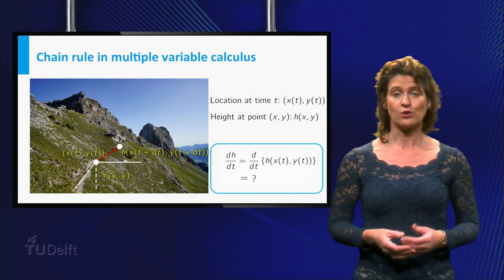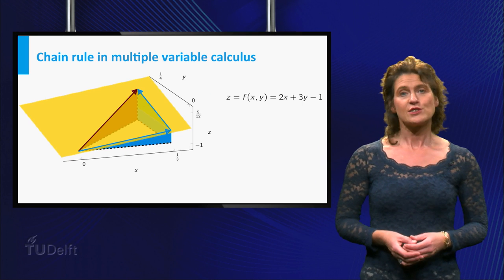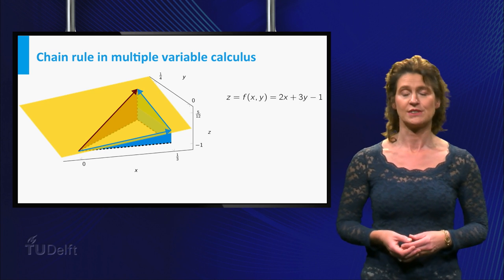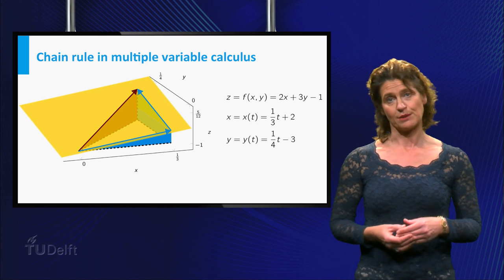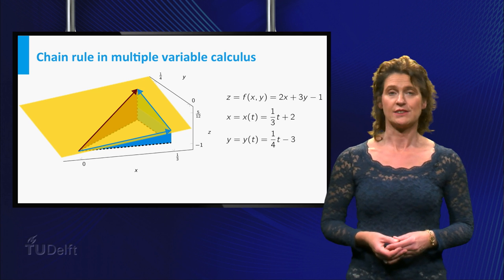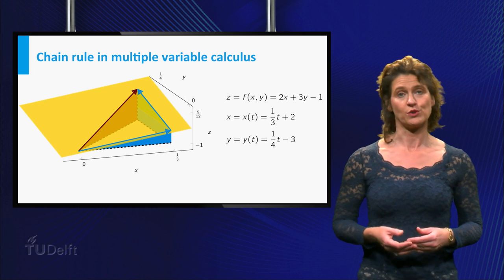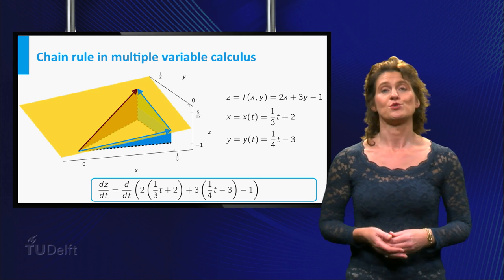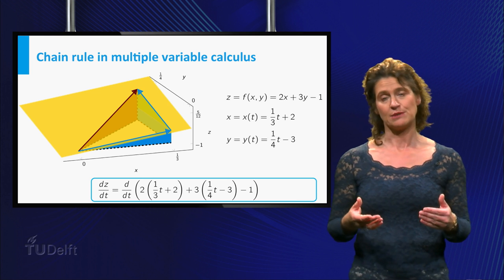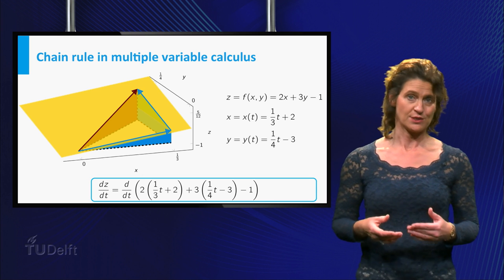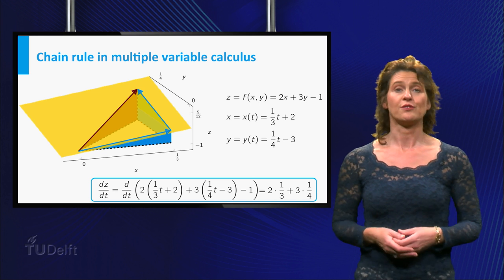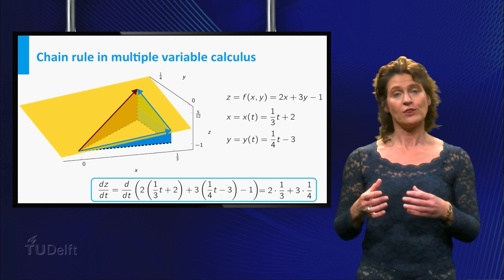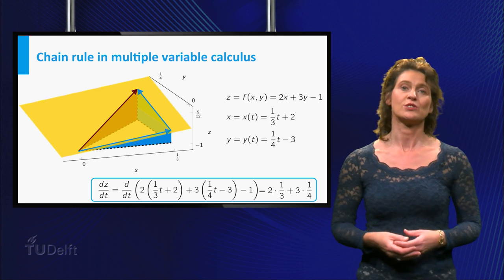You are now in need of a more extensive version of the chain rule. Let's look at a simple situation. The function f is the formula for the plane given by z equals 2 times x plus 3 times y minus 1, where x is 1 third times t plus 2 and y is 1 quarter times t minus 3. You can calculate the derivative directly by plugging in the expressions for x and y into the formula of f. This gives f equal to 2 times (1 third times t plus 2) plus 3 times (1 quarter times t minus 3) minus 1. So the derivative of f equals 2 times 1 third plus 3 times 1 quarter. This derivative has two components: one term associated to the change in x and one term associated to the change in y.